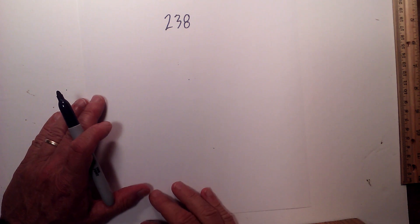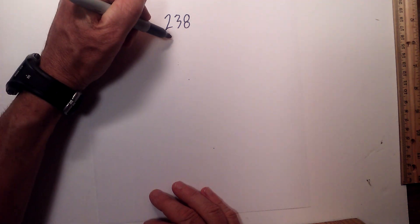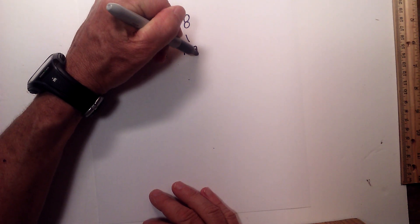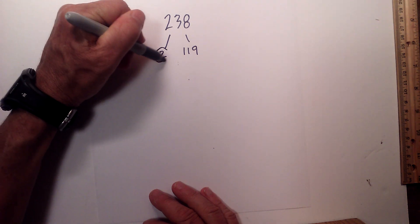Let's find the prime factorization of 238 and 2300. Let's get started with 238. 2 times 119 equals 238.